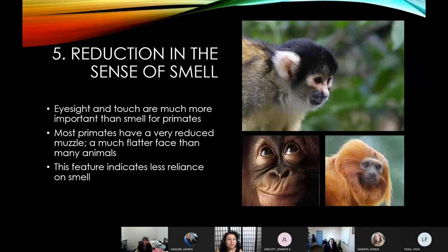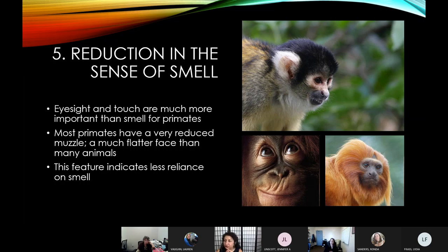Another thing we see in primates is a reduction in the sense of smell. Smell is not nearly as important for primates because of our reliance on these other characteristics. We do have some sense of smell — we can smell smoke, or rotten food that tells us not to eat something. But we can't smell if a predator is coming 30 feet away the way non-primate animals can. It's the development of eyesight, touch, and intelligence that helps us overcome that need for smell.